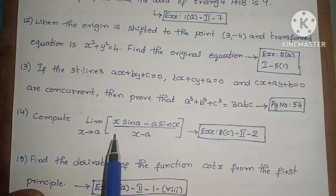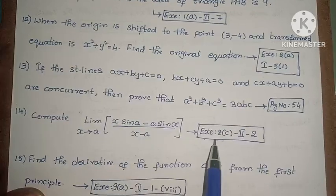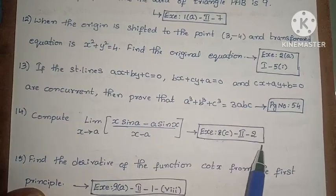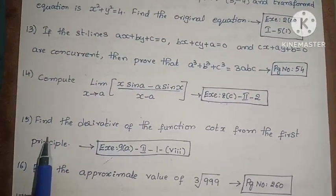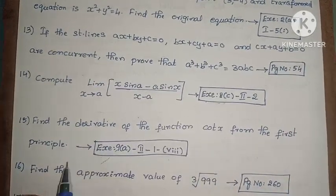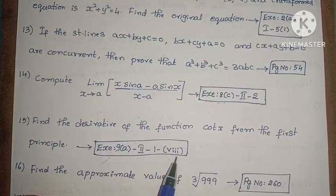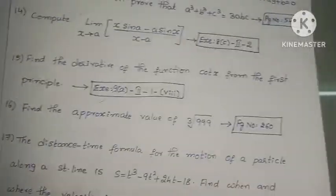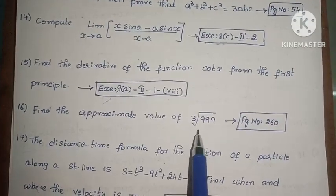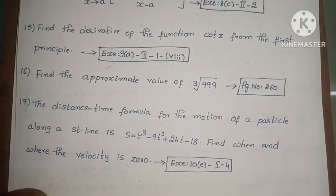Next, compute limit as x tends to a of x sin a minus a sin x divided by x minus a. Exercise 8c, second roman law, second one. Next, find the derivative of the function cot x from the first principle. Exercise 9a, second roman law, eighth one. Next, find the approximate value of fourth root of 399. Page number 260, example problem.